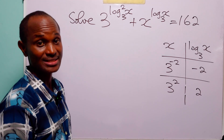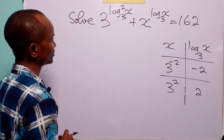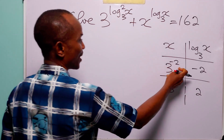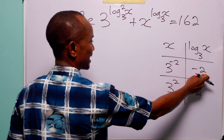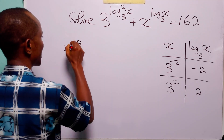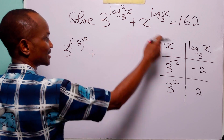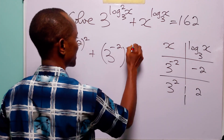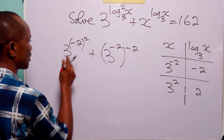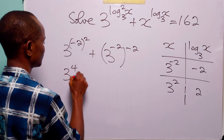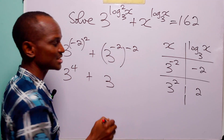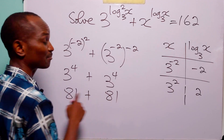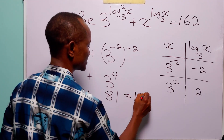To verify, we substitute into the original equation. When x equals 3 to the power minus 2, log to base 3 of x is minus 2. So the first term is 3 to the power minus 2 squared, and minus 2 squared is 4, giving 3 to the power 4 which is 81. The second term is x to the power log to base 3 of x, which is 3 to the power minus 2 times minus 2, also equal to 81. And 81 plus 81 equals 162 — correct.